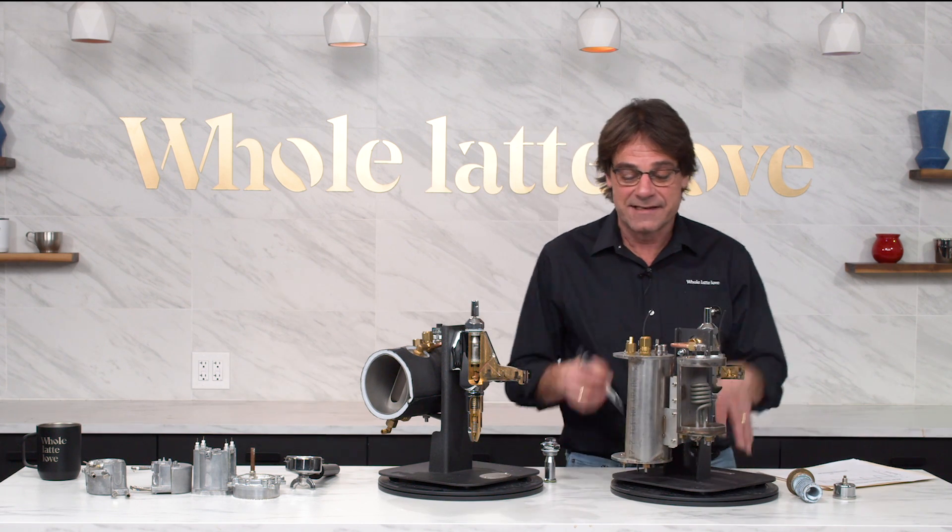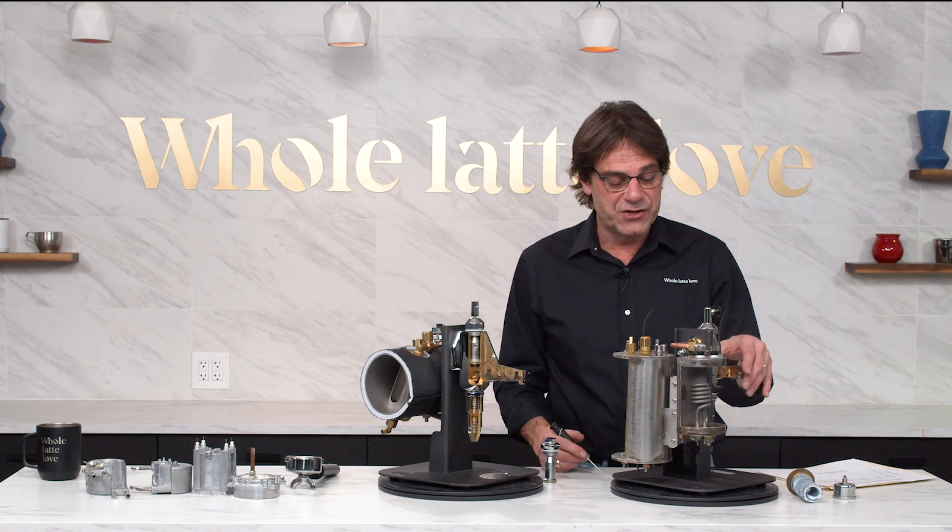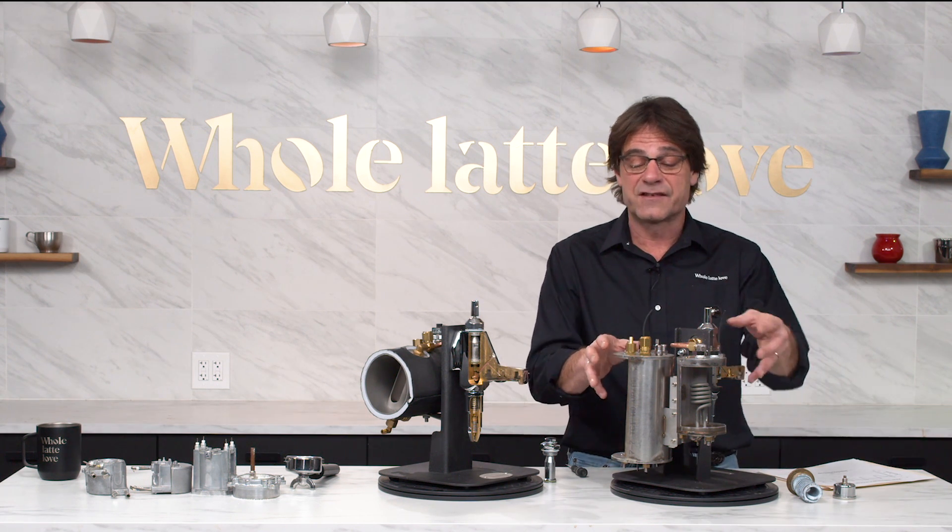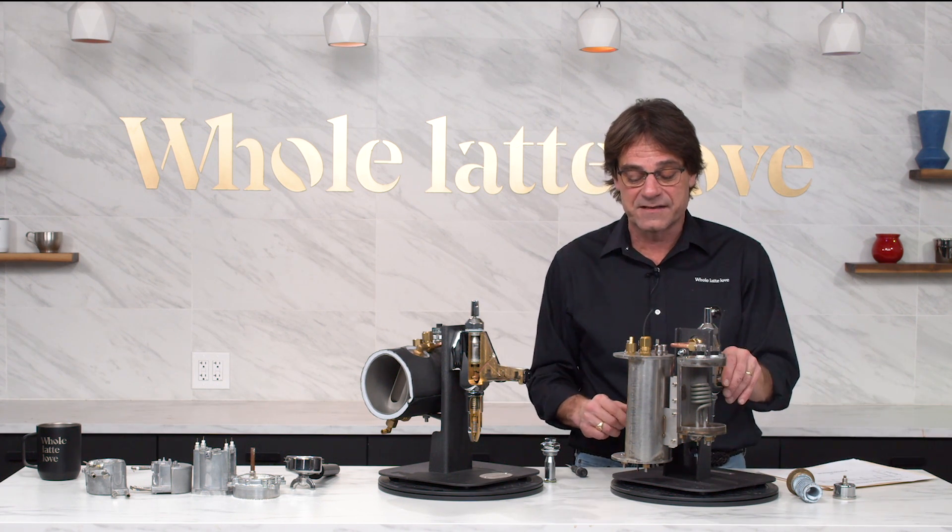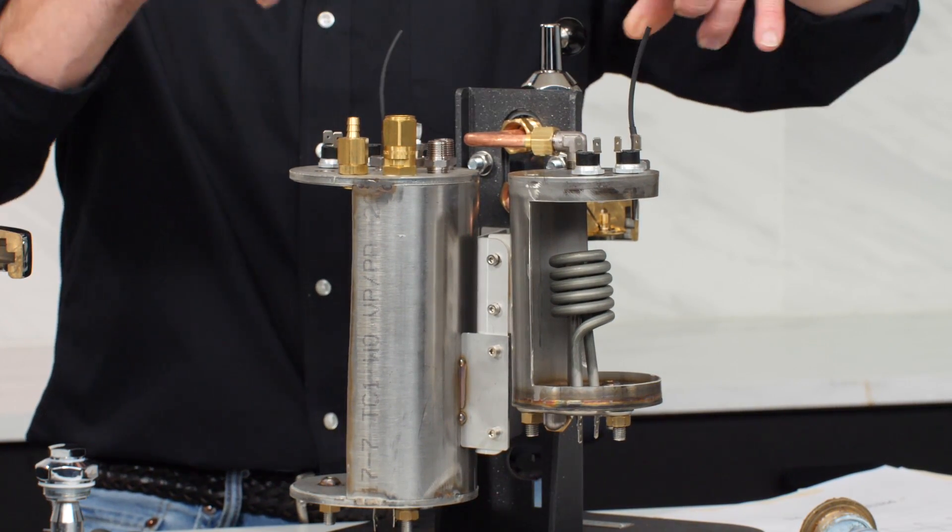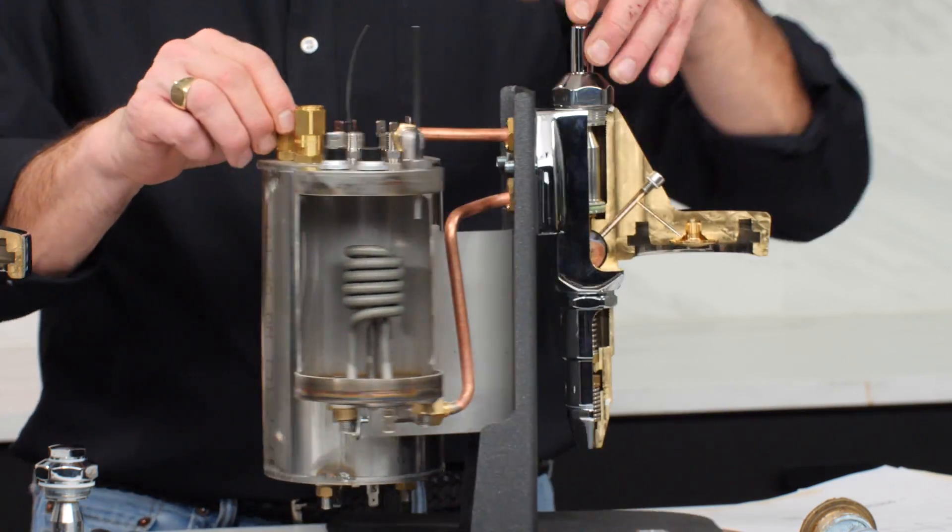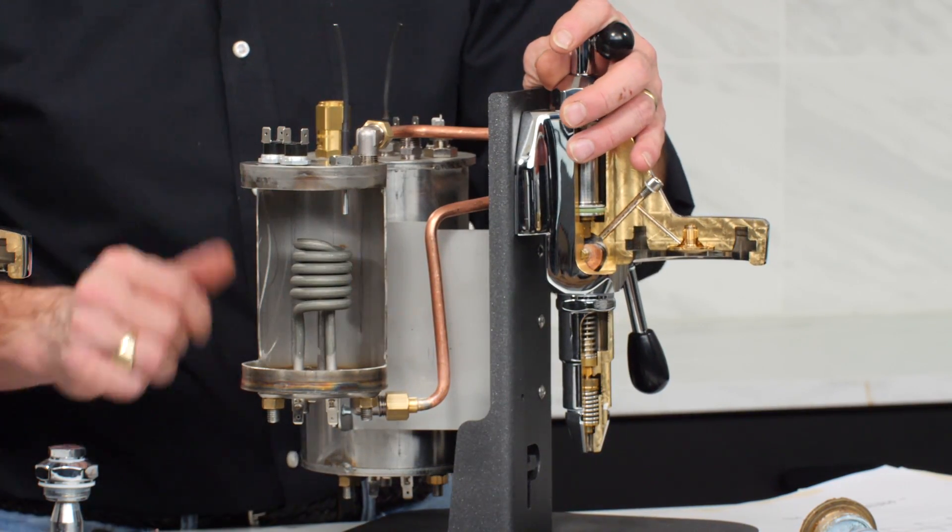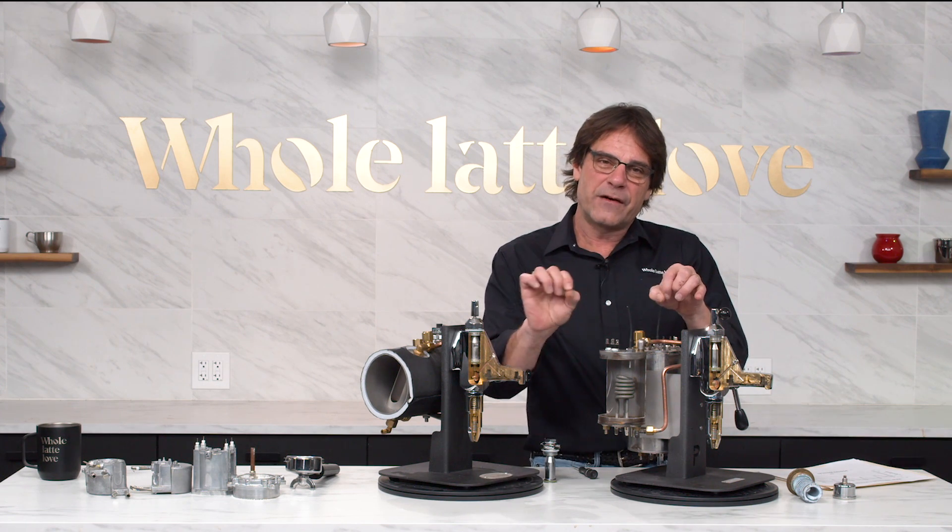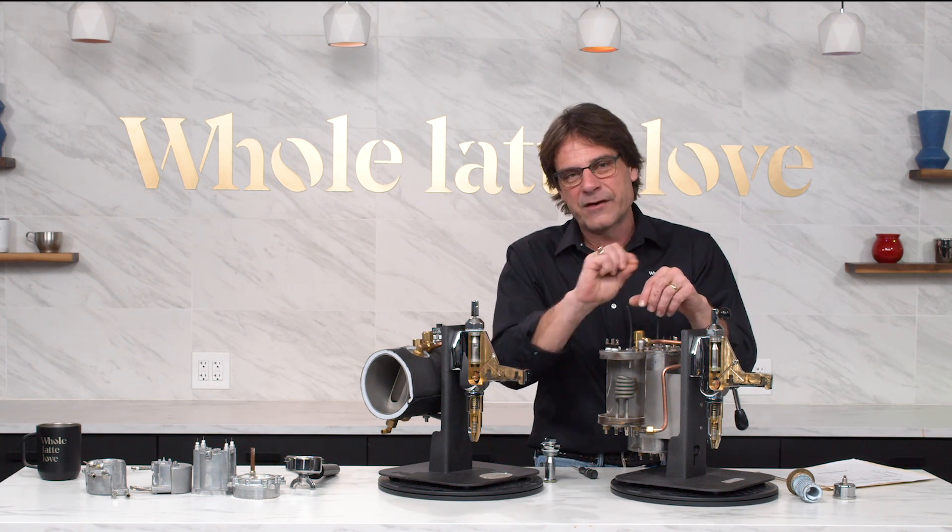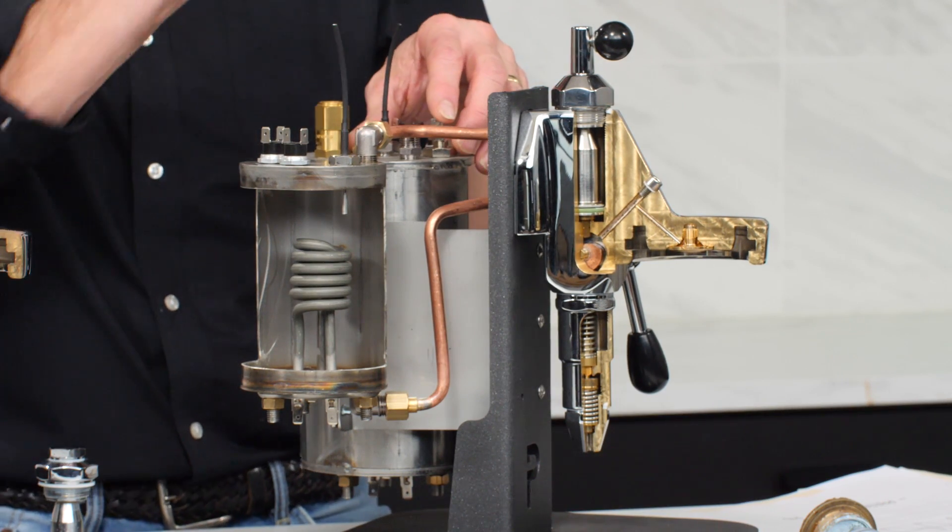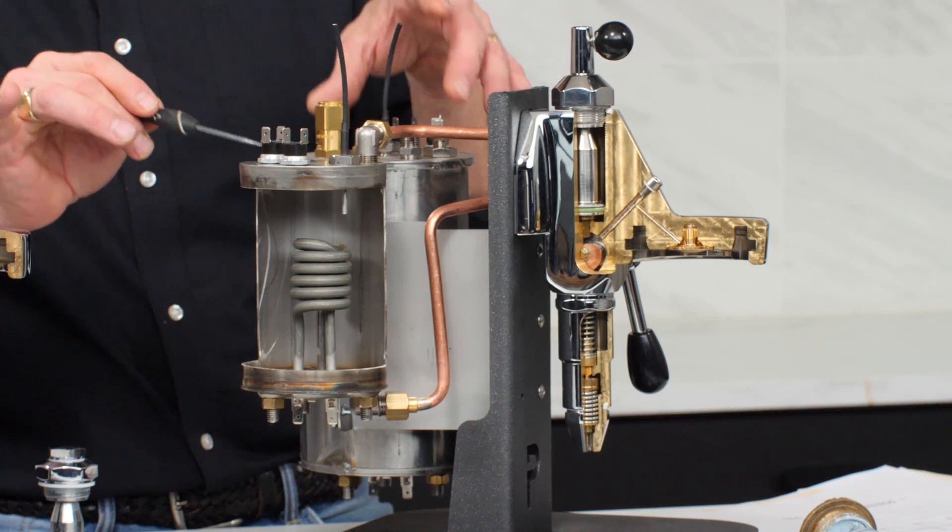But let's go to the next level now. Here is a PID dual boiler machine. This I believe is from a Profitech Pro 700. If you have an ECM Synchronica, it's going to be pretty much identical to this setup. So here are the PID wires. So instead of a pressure stat on these, we have a probe in here that measures the temperature in both boilers.